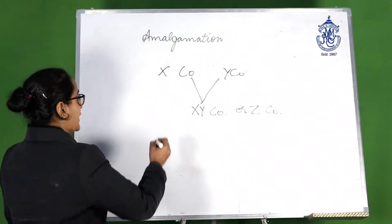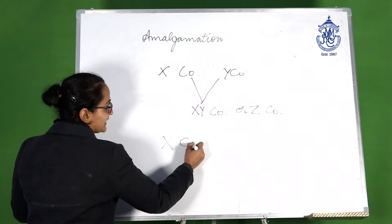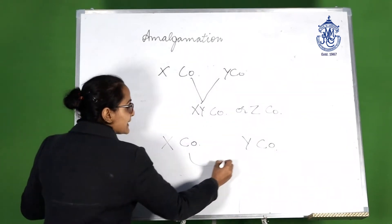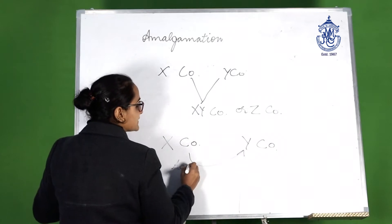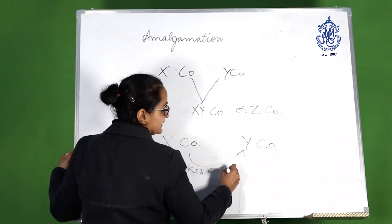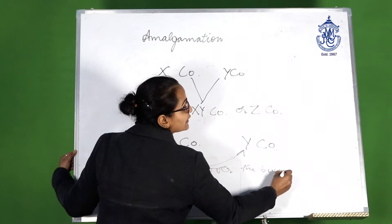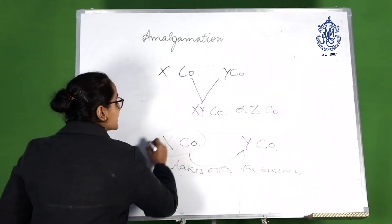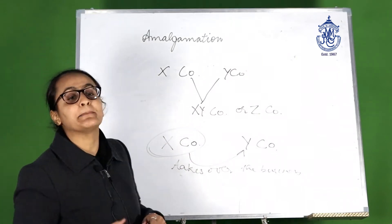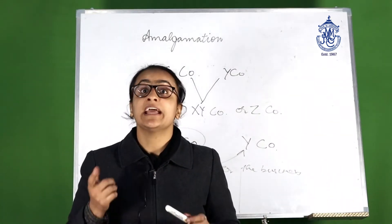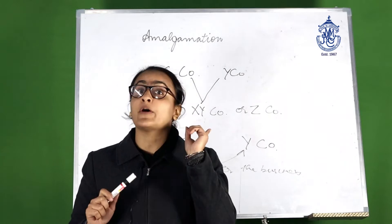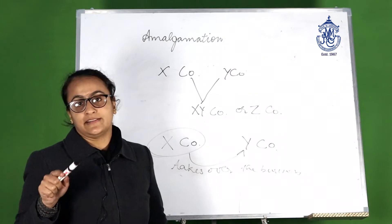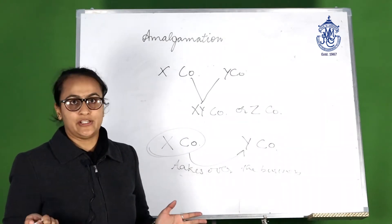The second term is absorption. Absorption is when there are two companies, X company and Y company, and X company takes over the business of Y company and continues to operate as X company. Y company will be non-existent — it shall go into liquidation. That is known as absorption.